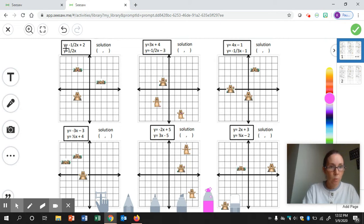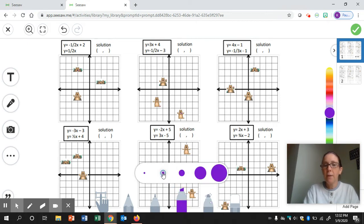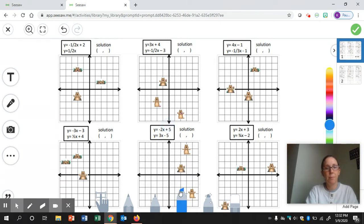The first equation is y equals negative one-half x plus two. First I'm going to choose the highlighter tool here at the bottom. I want to make sure that the size is the second largest one, and you can use any color you like. I'm going to use light blue.